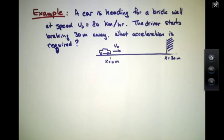In this example problem, we're going to consider a car that is rushing toward a brick wall at 80 kilometers per hour. The driver realizes he's in for a collision and starts braking about 30 meters away. What acceleration is required for him to brake to a stop before he hits the wall?